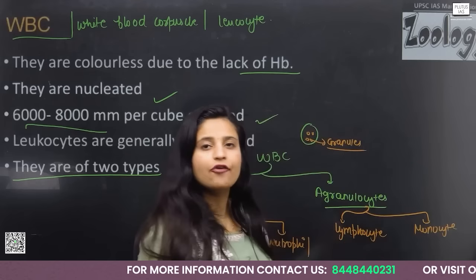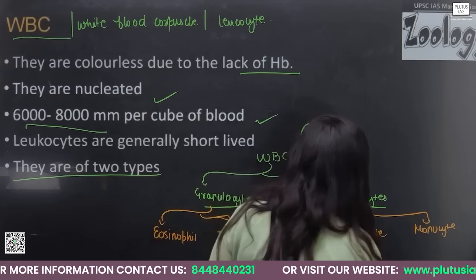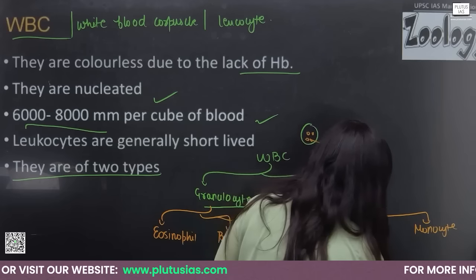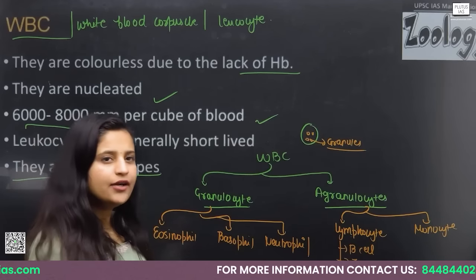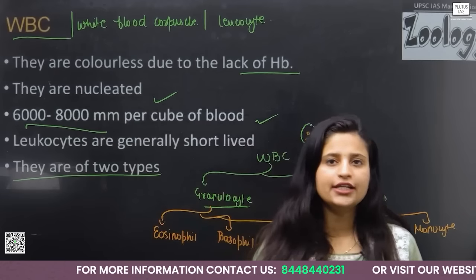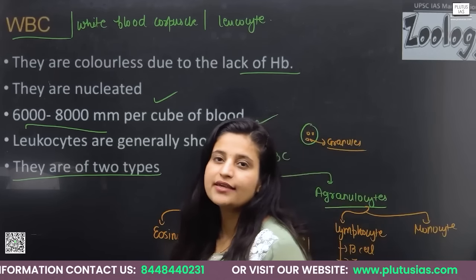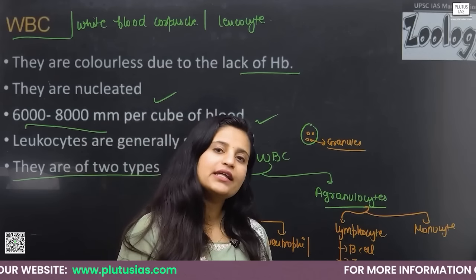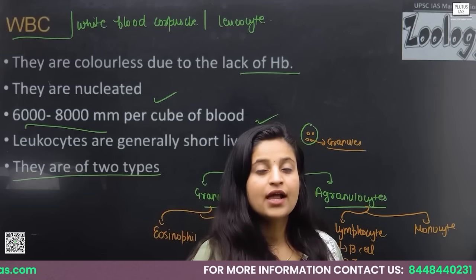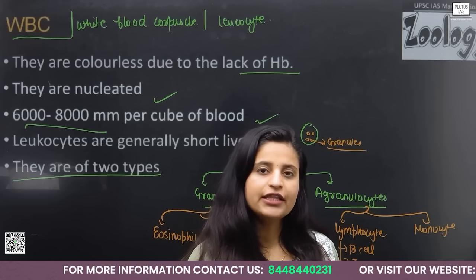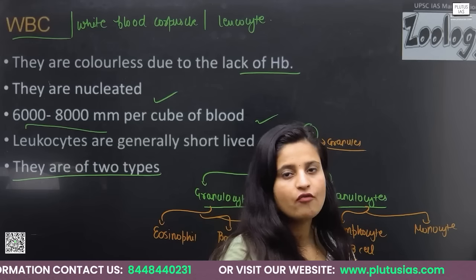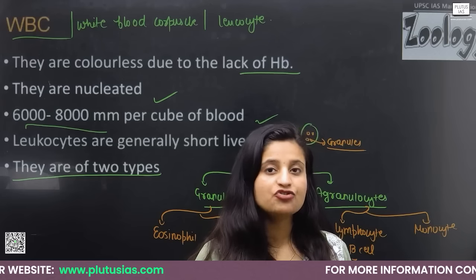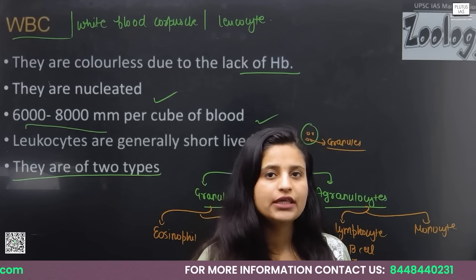Lymphocytes have two types: B-cell lymphocytes and T-cell lymphocytes. An interesting property of WBCs is that they can show movement — called amoeboid movement. Like amoeba makes false feet (pseudopodia) to move, WBCs use pseudopodia to travel through the blood from one position to another.